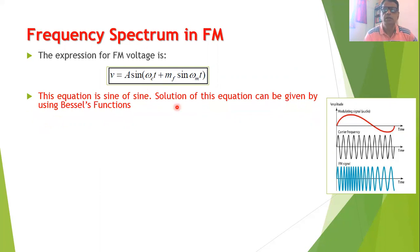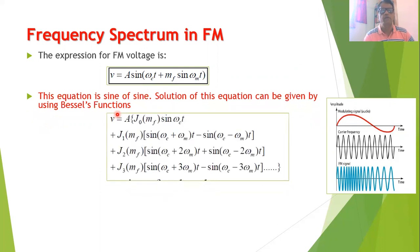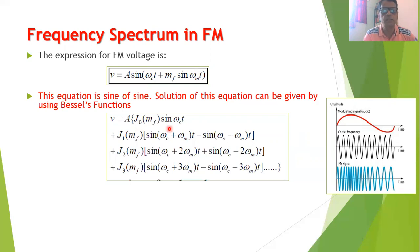To obtain the solution of this sine-of-sine equation, we use Bessel's function. When we expand this equation, we can rewrite it as: V = A · [ J0(MF)·sin(ωC·t) + J1(MF)·( sin((ωC + ωM)t) − sin((ωC − ωM)t) ) + ... ]